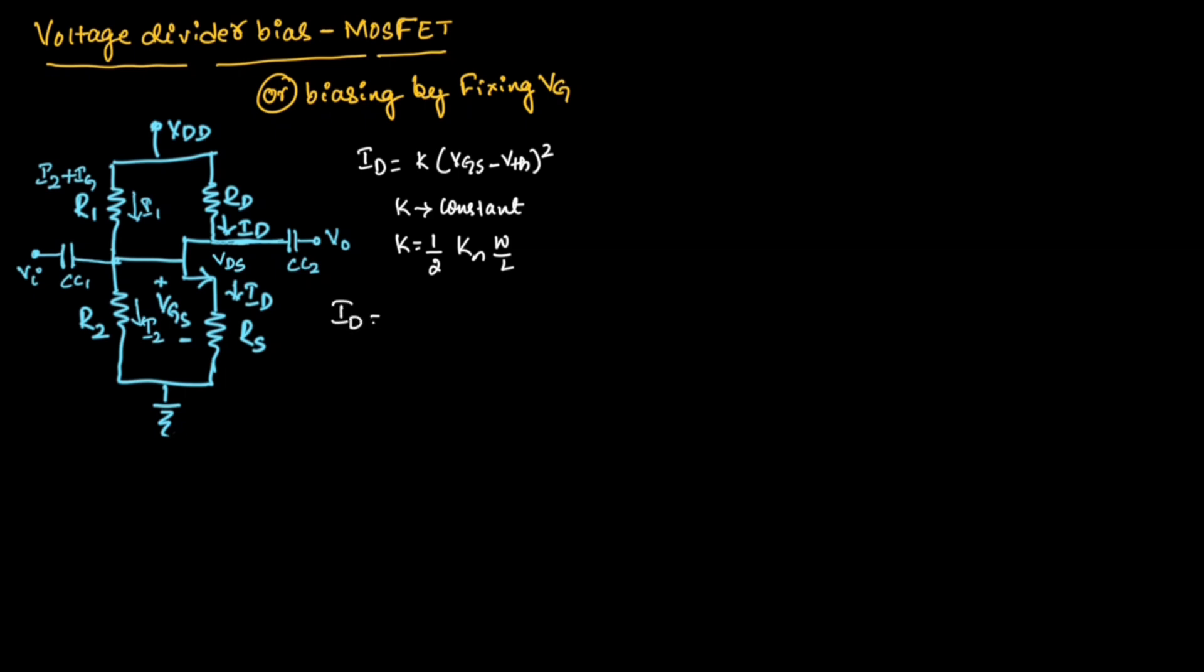Here drain current is also written as Ig plus Is, so drain current will be equal to gate current plus source current. Here gate current Ig will be assumed to be 0, therefore Id will be equal to Is. That is why across the source terminal, instead of writing Is, we have written it as Id itself, because theoretically we assume gate current as 0, since practically gate current will be very very small.